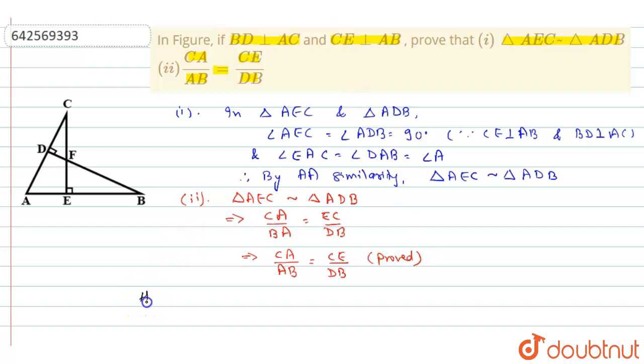Therefore, finally our answer will be hence proved that number 1, triangle AEC is similar to triangle ADB, and number 2, CA by AB is equal to CE by DB. I hope you have understood the explanation. Thank you.